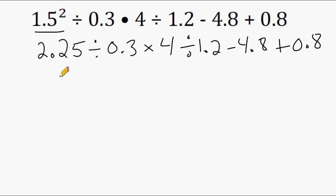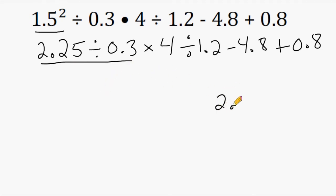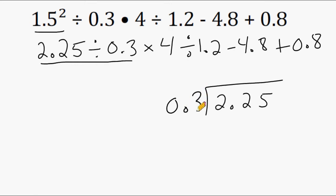Next we go to the beginning of our expression and we perform multiplication or division in order of appearance from left to right. So as we swipe from left to right, we immediately come across a division sign, so we have to take 2.25 and divide that by 0.3. Now we have a decimal in our divisor and the rules state that we have to move that all the way to the end of our divisor to turn that into a whole number. And what we do to the outside, we do to the inside.